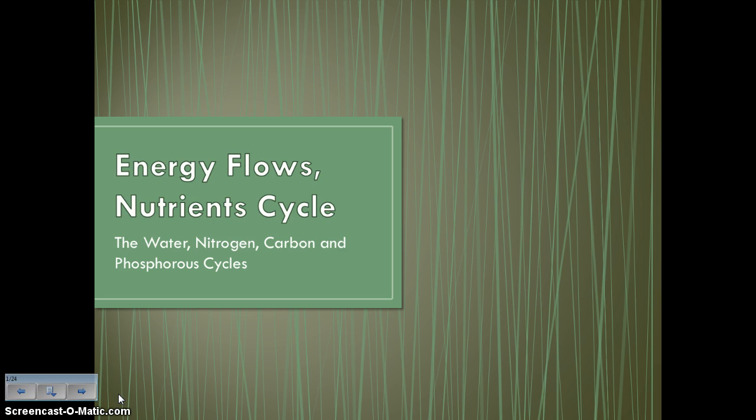We talked previously about food webs and how energy flows. Today we're going to be looking at how nutrients cycle. The nutrients we're going to be looking at are water, nitrogen, carbon, and phosphorus.